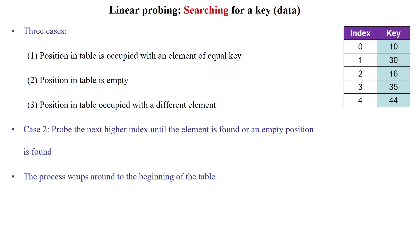Welcome to searching operation in linear probing. There are three possibilities available when searching data in a hash table using linear probing. First, the position in the table is occupied with an element having an equal key. Second, the position in the table is occupied by a different element having the equal key. Third, the position in the table is empty.